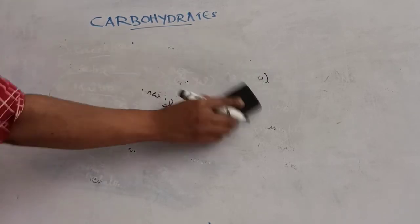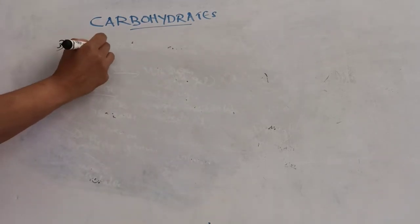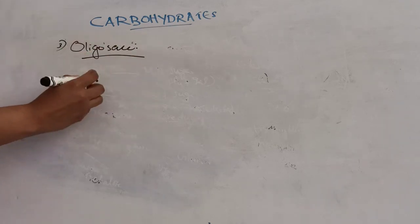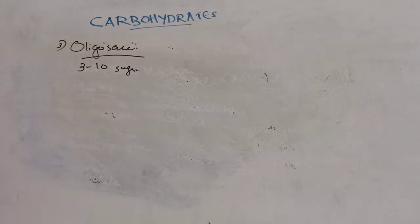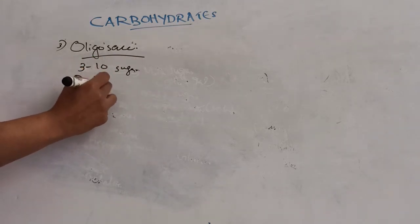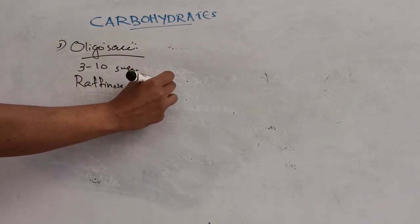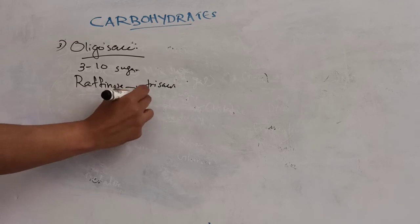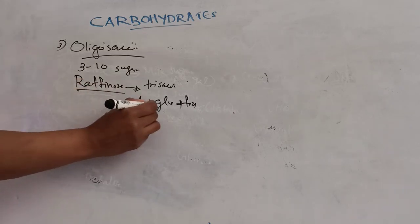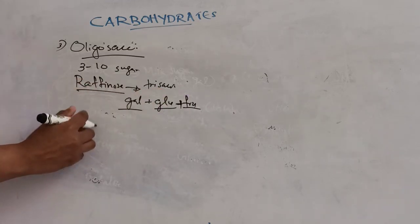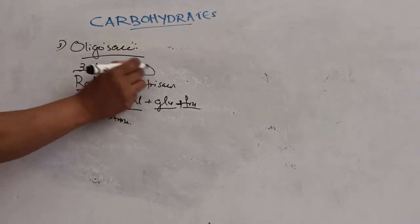The third group is oligosaccharides. These contain 3 to 10 sugar units. For example, raffinose is a trisaccharide of galactose, glucose, and fructose. Another example is maltotriose.